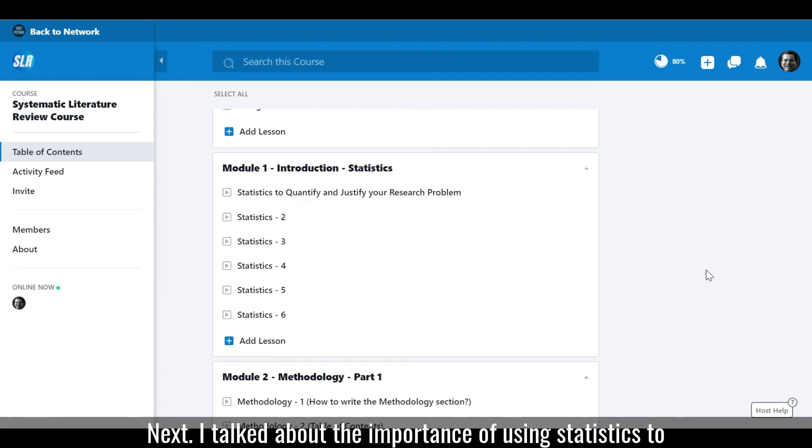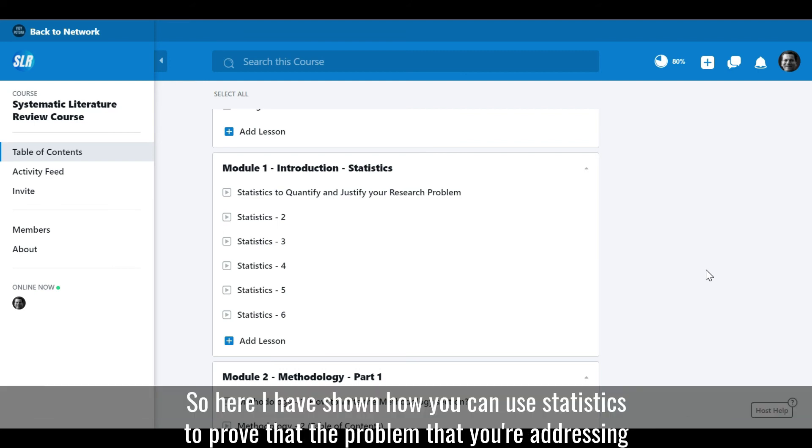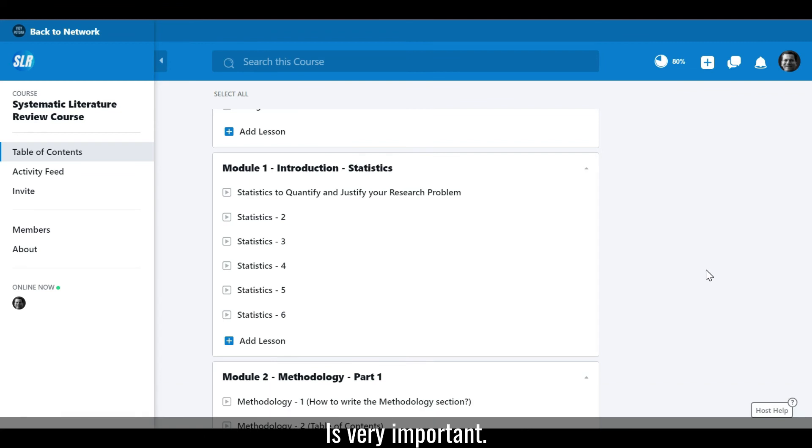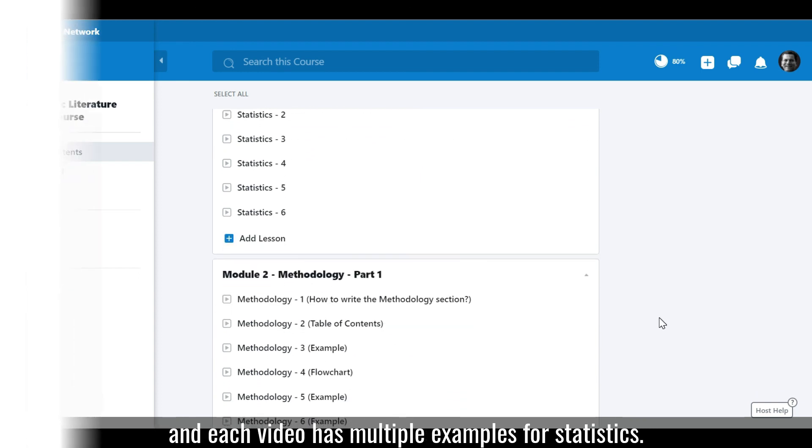Next I talk about the importance of using statistics to quantify and justify your research problem. So here I have shown how you can use statistics to prove that the problem that you are addressing for your research is very important. So there are some examples here, there are six videos and each video has multiple examples for statistics.